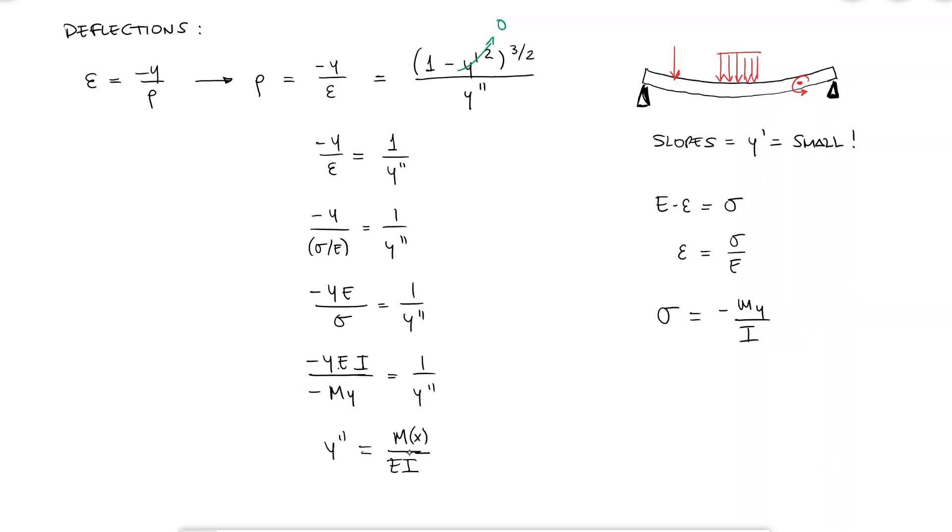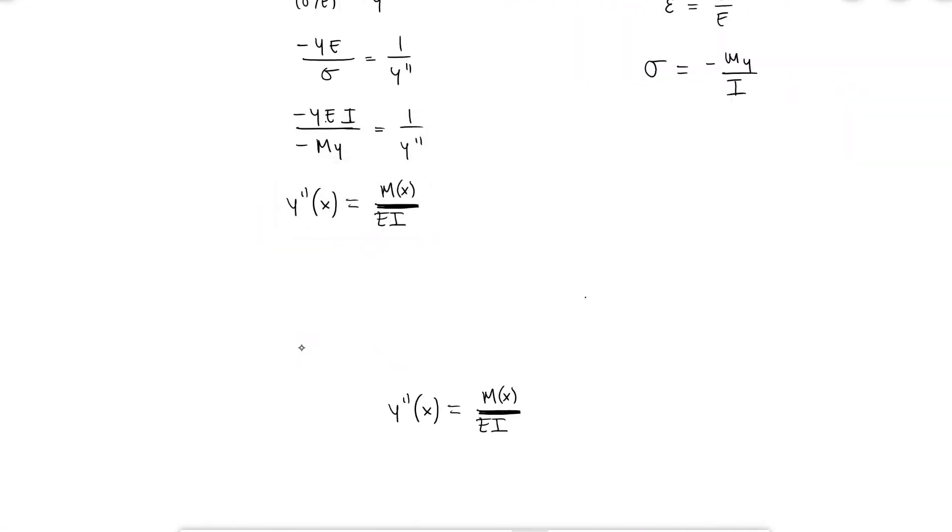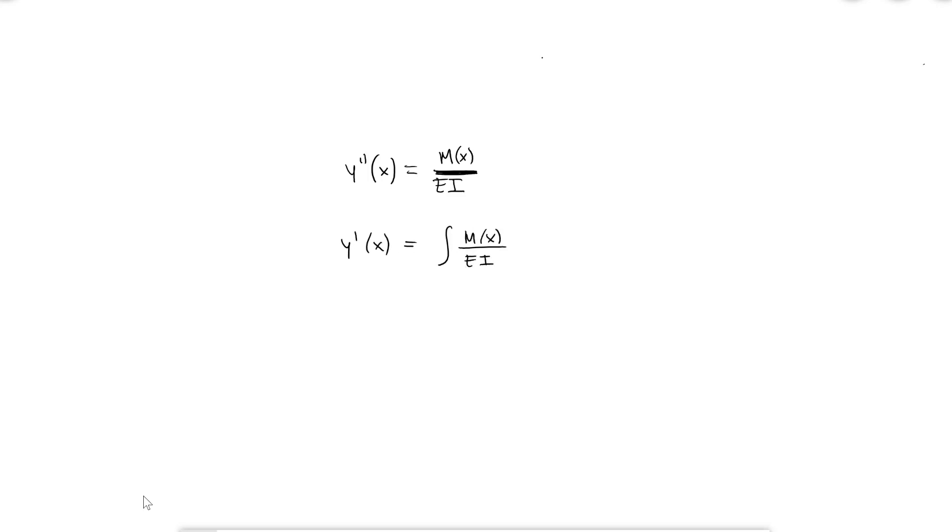The moment is of course a function of x as it changes as I move along the axis of the beam. That's the whole reason we do bending moment diagrams. This means that y double prime is also a function of x. This expression is very important to calculate deflections, because if I know that I can find the second derivative, if I know the moment as a function of x, I can integrate once to find the slope of the beam, and integrate a second time to find the deflection.